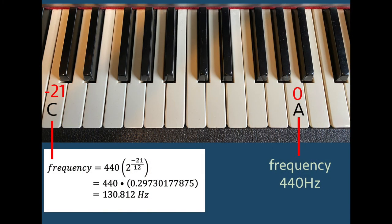As another example, the C more than an octave below A equal to 440 Hz has note number negative 21. By the formula, the frequency is 440 times 2 raised to the power negative 21 divided by 12, which ends up being equal to 130.812 Hz.